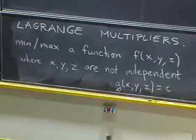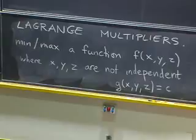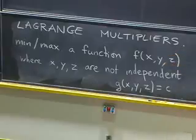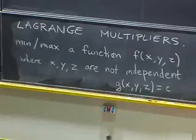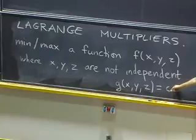One way to do that, if the constraint is very simple, is to solve for one of the variables and plug back into f. Then we have a usual min-max problem. The problem is sometimes you can't actually solve for x, y, z here because the condition is too complicated. Then we need a new method — and that's what we are going to do.